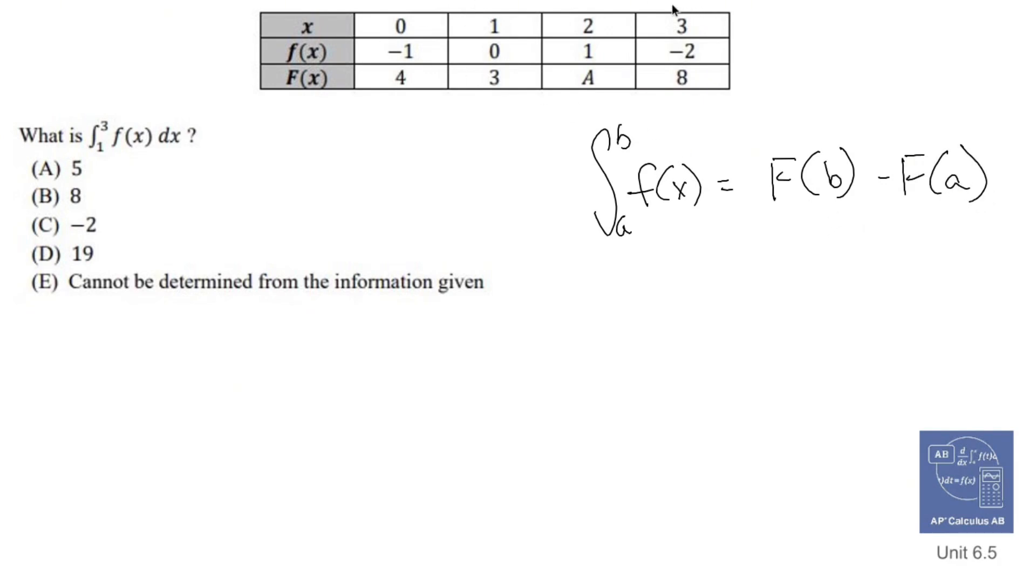I'm given this information right here. So if I want from 1 to 3 of f(x), 1 would be my a, 3 would be my b, so it's F(3) minus F(1).